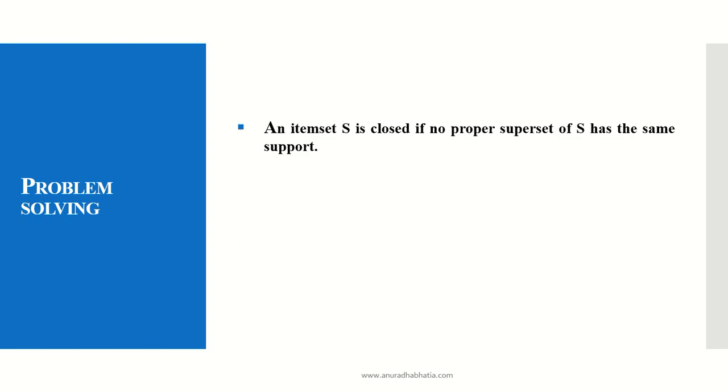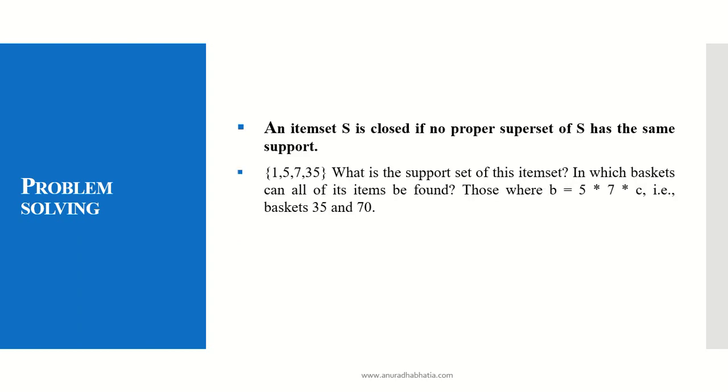For this particular consideration: {1,5,7,35}. Let us calculate the support set of this itemset. In which basket can all of its items be found? Those where B equals 5×7×C, that is the baskets 35 and 70. This will give 100% support if they belong to basket number 35 and 70.